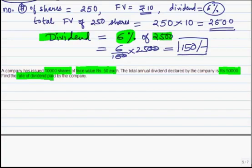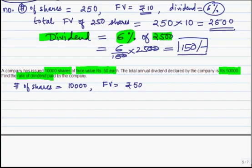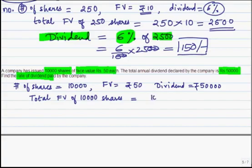Let us write down what is given. Number of shares is 10,000 and face value is Rs 50. Total dividend offered by the company is Rs 50,000. What is asked is the rate of dividend. First we calculate the total face value of 10,000 shares: 10,000 multiplied by Rs 50 equals Rs 5,00,000 — that is 5 lakhs. This is the total face value.